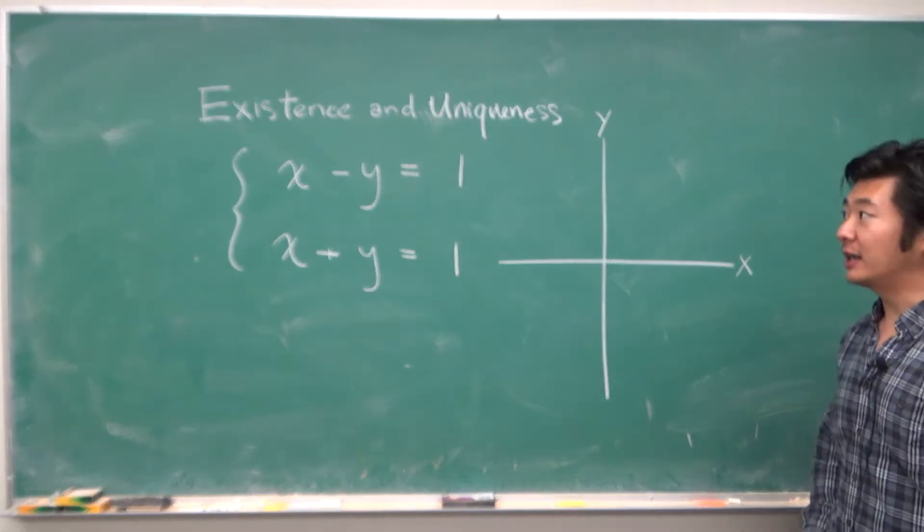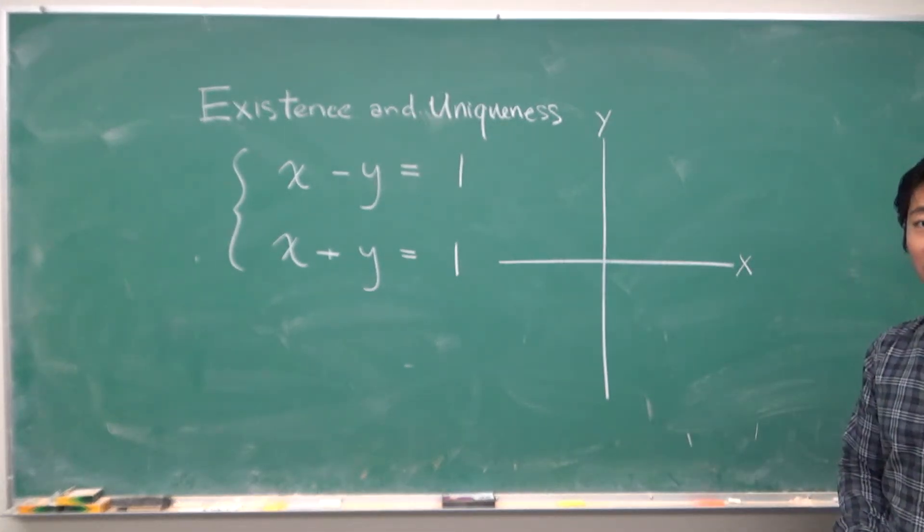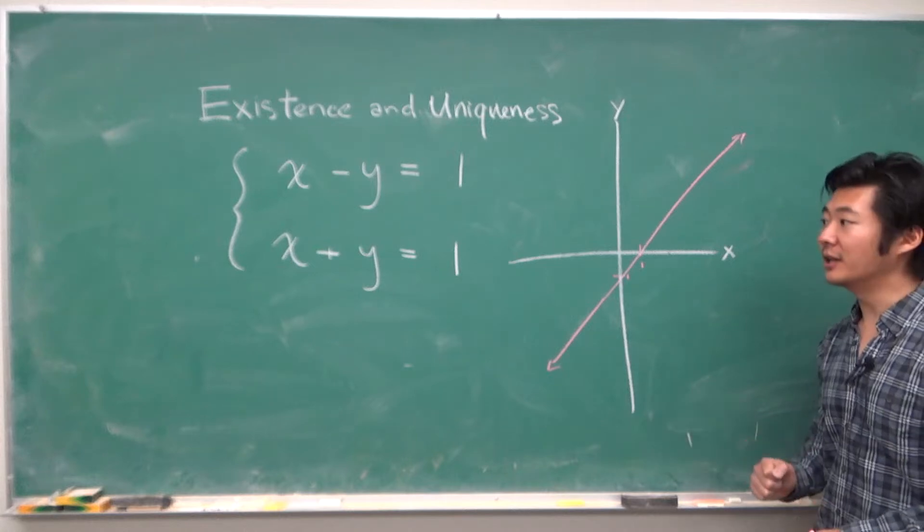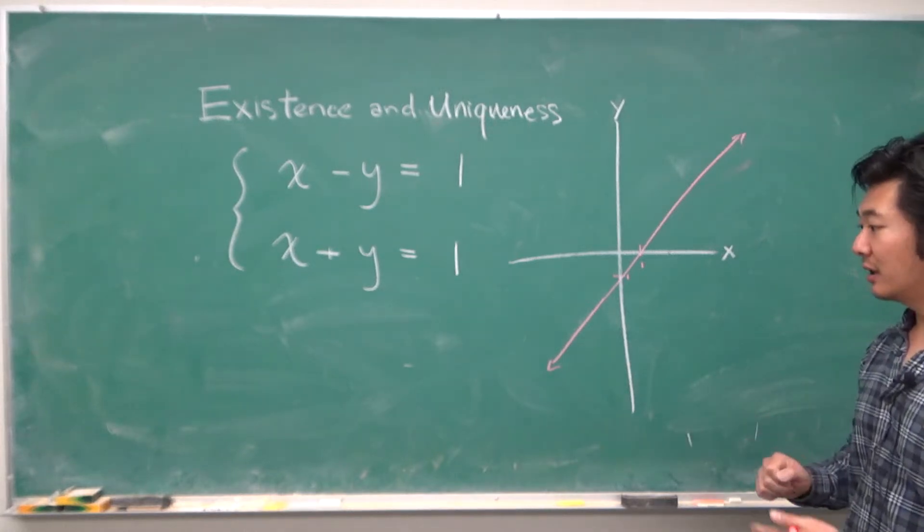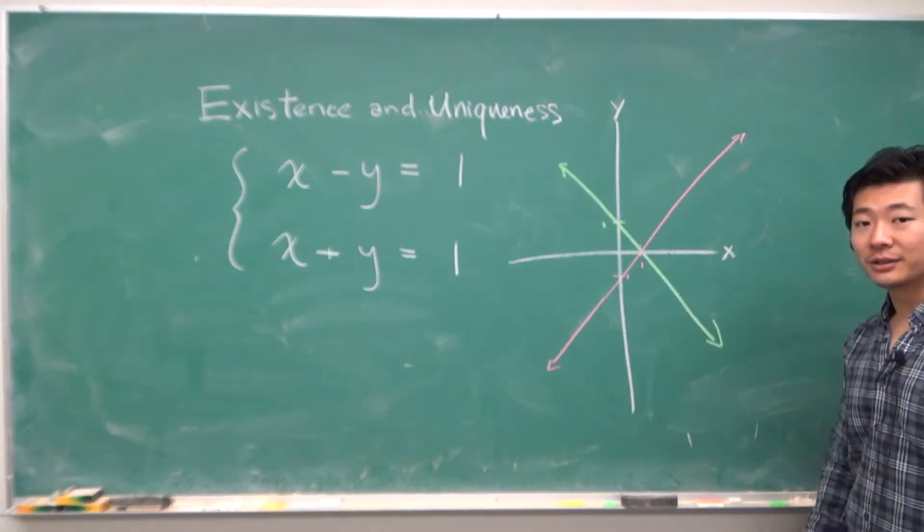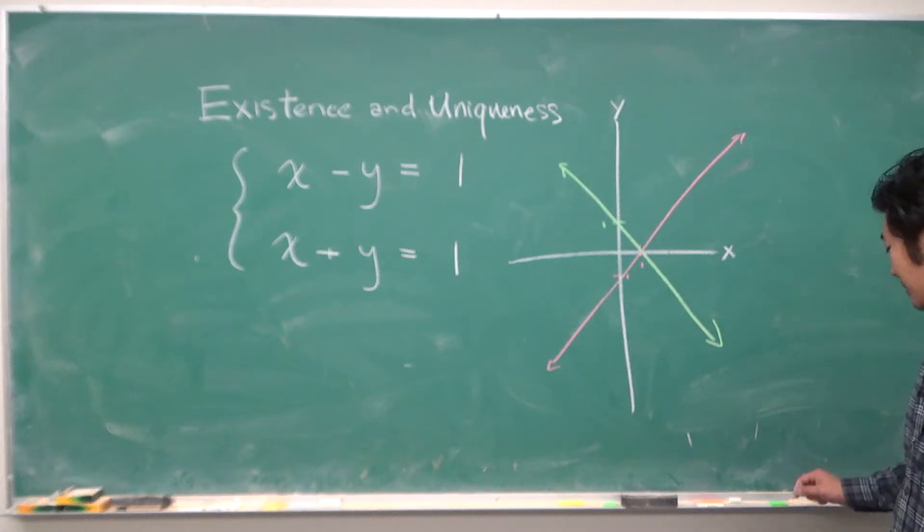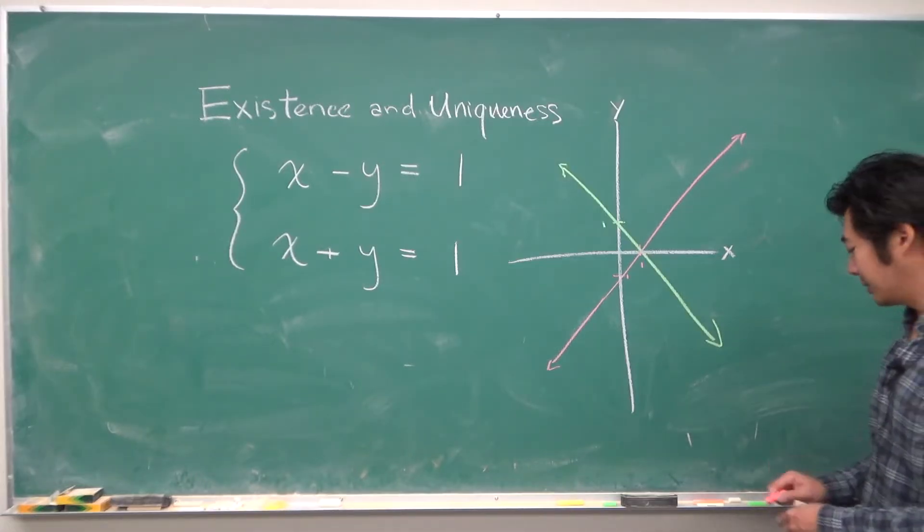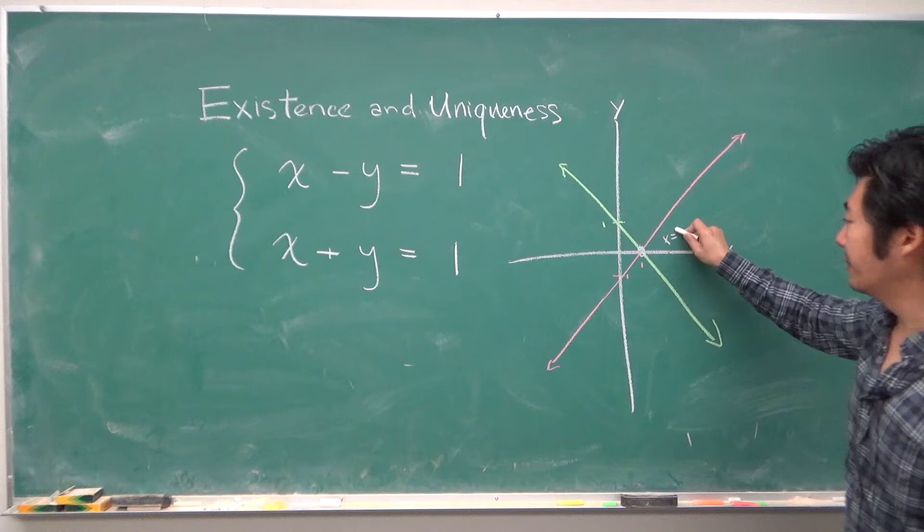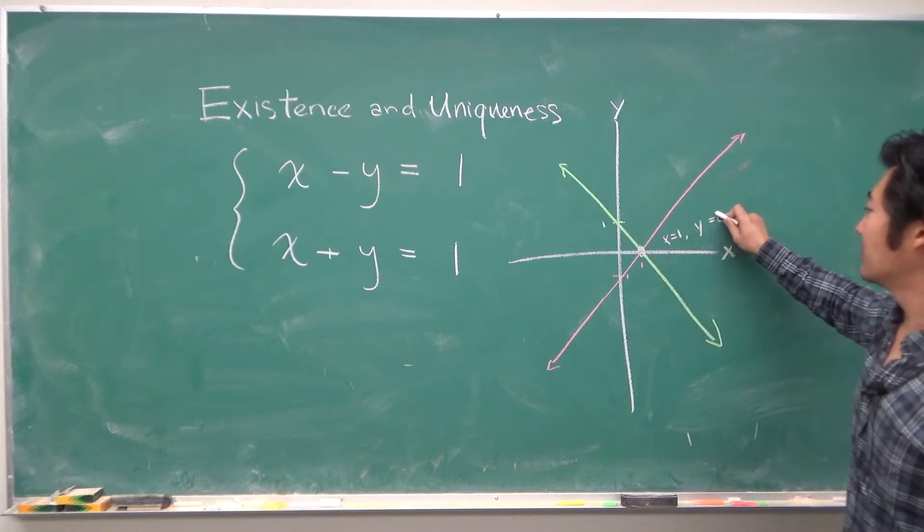The equation x minus y equals 1 will look something like this. And the equation x plus y equals 1 will look something like this. A solution to this equation is going to be at the intersection, which is at x equals 1 and y equals 0.